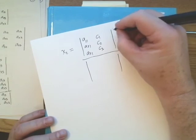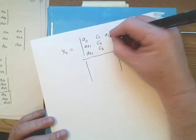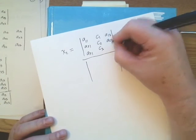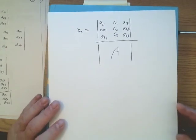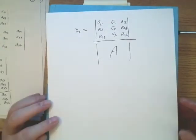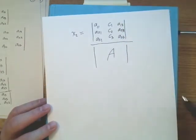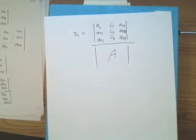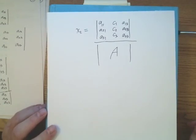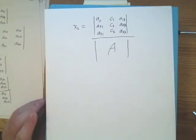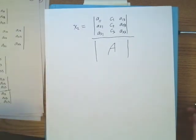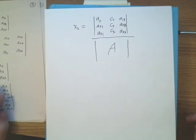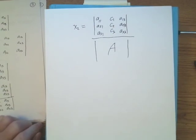Likewise for x3, you replace the third column and leave the other two alone. That's Cramer's Rule — that's how it works and why it works. It comes directly from the properties of determinants. You can obviously extend this to any n linear equations and n unknowns; it works exactly the same way. That's the essence of why Cramer's Rule works.